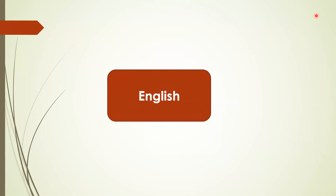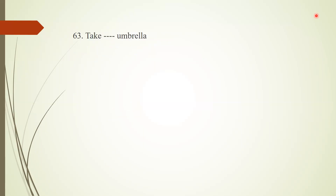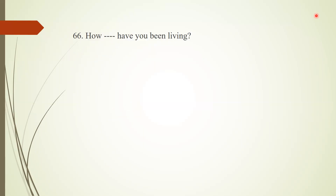Now we'll discuss the English segment. Question 61: Synonym of 'engrossed' is absorbed. Question 62: Antonym of 'pity' is verbose or wordy — both options are acceptable. Question 63: Choose the correct preposition — 'take an umbrella.' Question 64: Synonym of 'escort' — it might be abandoned or ditch. Question 65: Antonym of 'wrapped' is depressed.